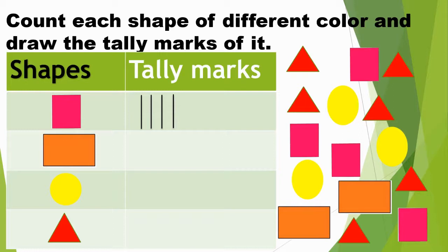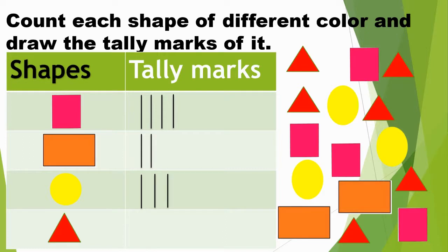Now we will count how many rectangles there are: 1, 2. There are 2 rectangles. I will draw 2 tally marks. Now we will count how many circles there are: 1, 2, 3. There are 3 circles. I will draw 3 tally marks.